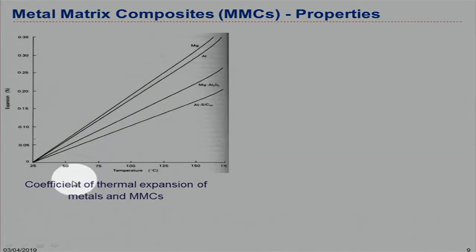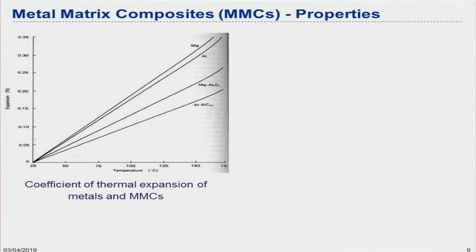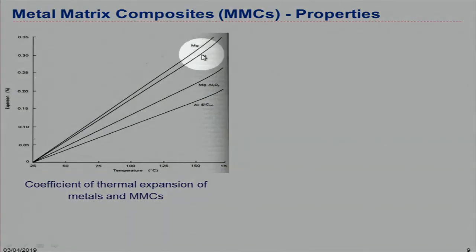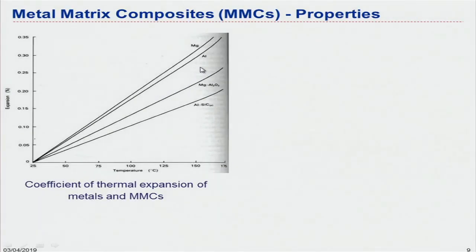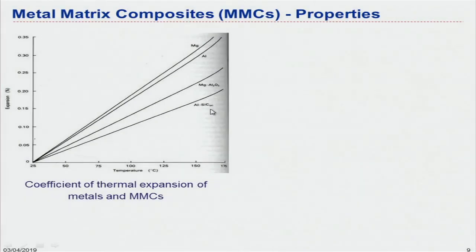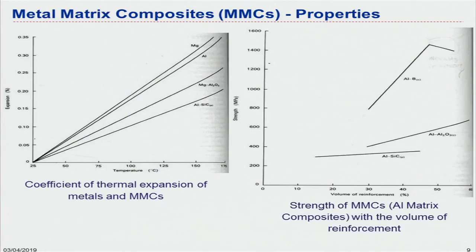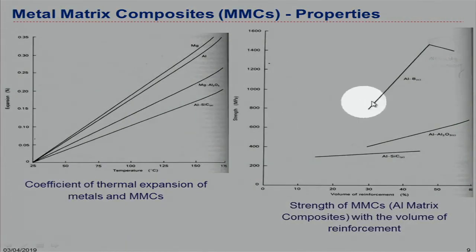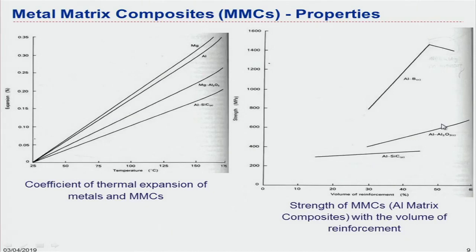Another important property in the manufacturing industry is thermal expansion — how a material behaves with temperature, whether it will expand or melt. Monolithic materials like magnesium and aluminium are not that great at withstanding high temperatures. However, metal matrix composite systems are good in high temperature applications with lower thermal expansion coefficients. Strength-wise, aluminium-boron metal matrix composites show good strength in comparison to different systems.